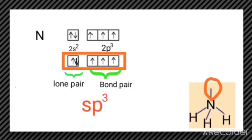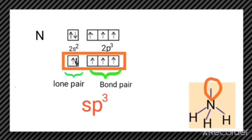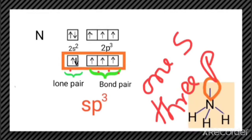Let us talk about ammonia. In ammonia the central atom is nitrogen. Writing the ground state electronic configuration: it belongs to group 15, so ns2 np3 — particularly for nitrogen that is 2s2 2p3. We are only concerned with the valence electrons here. In the ground state there are already three unpaired electrons, and it forms bonds with three hydrogen atoms. So there is no excitation — no promotion of electrons in this case.